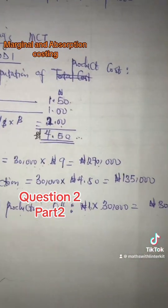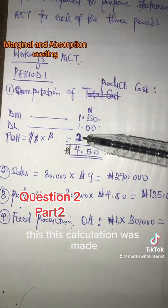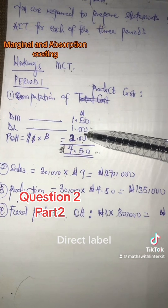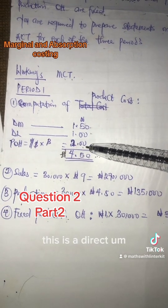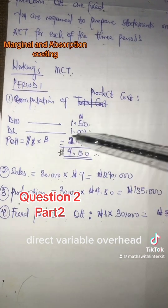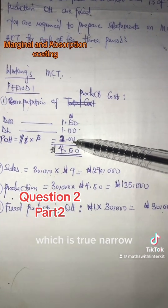That is why this calculation was made. Remember this is direct material, direct labor. This is a direct variable overhead, which is two naira.